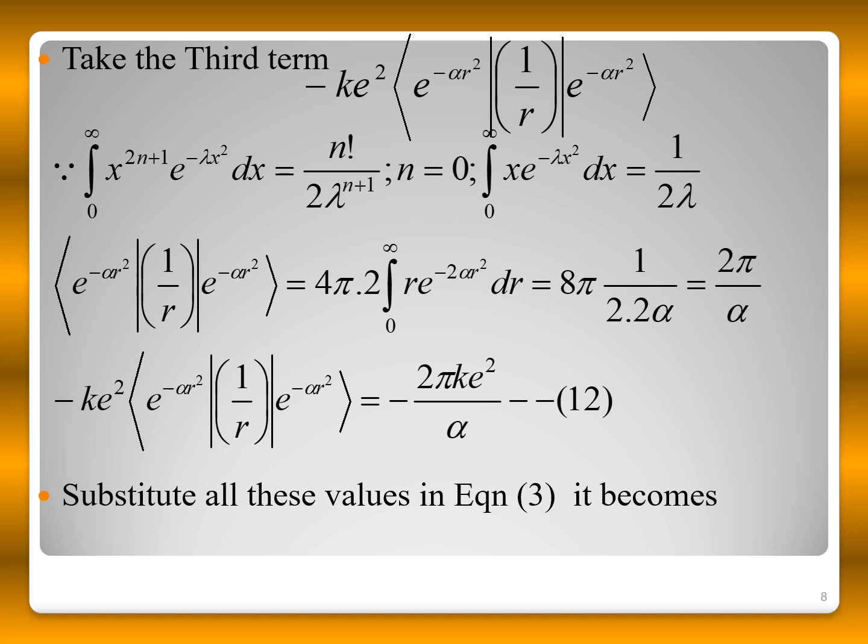For the third term, the expectation value of the potential energy -ke²/r: using the standard integral, this evaluates to -2πke²√(α) / something, giving the result -2ke²(2α/π)^(1/2).